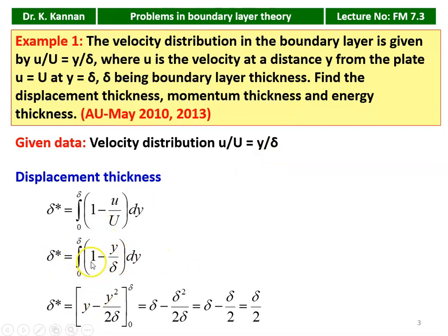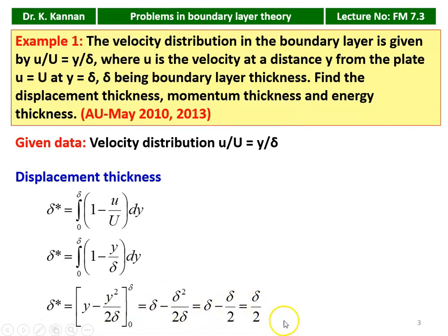Integrating: integrating 1 gives y, and integrating y/δ gives y²/(2δ). Applying the limits 0 to δ: δ* = δ − δ²/(2δ) = δ − δ/2 = δ/2. The displacement thickness for the given velocity profile is δ/2, where δ is the boundary layer thickness.